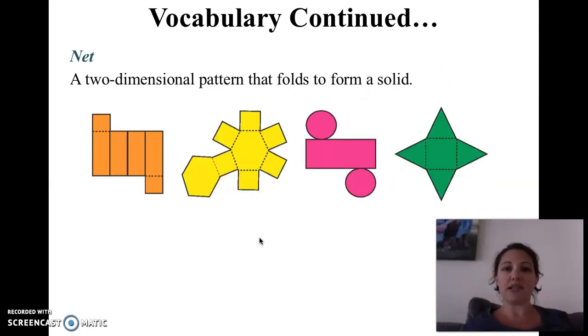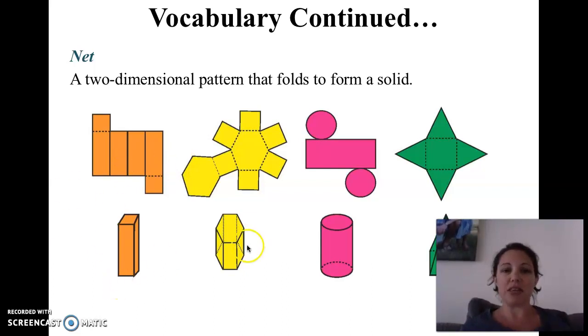These are the nets. That's taking a solid and splitting it open like slicing open a box and folding it flat. Each of these would make the solid underneath. So here we have a square prism, a hexagonal prism, a cylinder, and a square pyramid. I like to joke that you can sit on a prism. You don't want to sit on a pyramid.